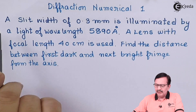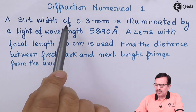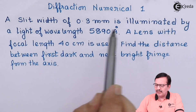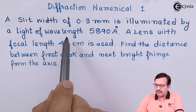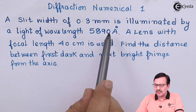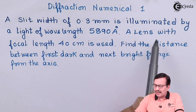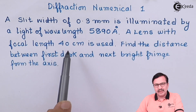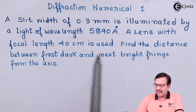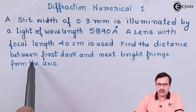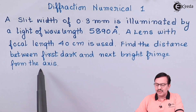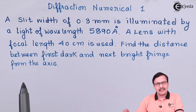Here is the numerical. A slit width of 0.3 mm is illuminated by a light of wavelength 5890 angstroms. A lens with focal length 40 centimeters is used. Find the distance between the first dark and the next bright fringe from the axis.